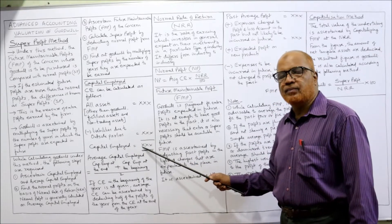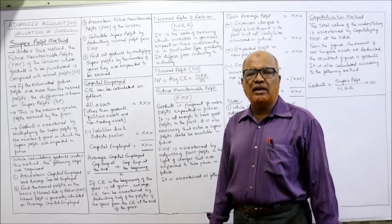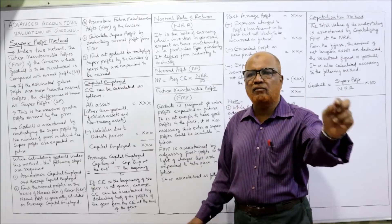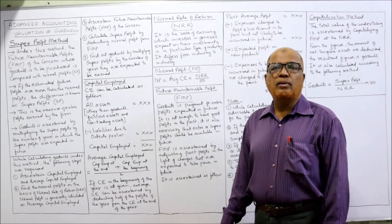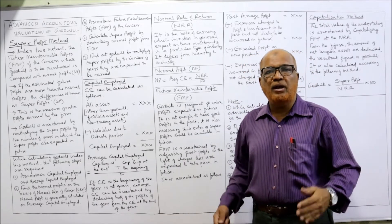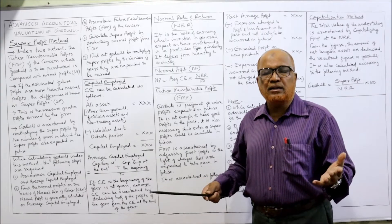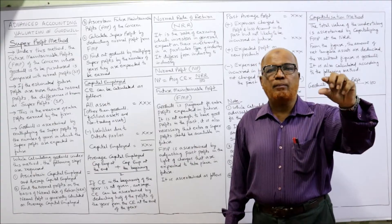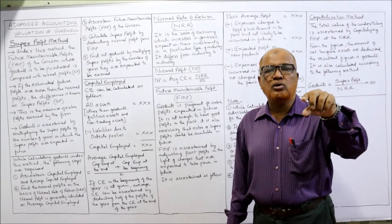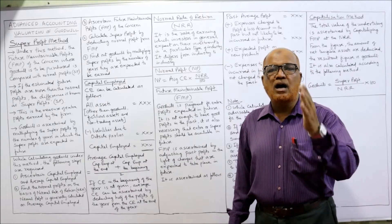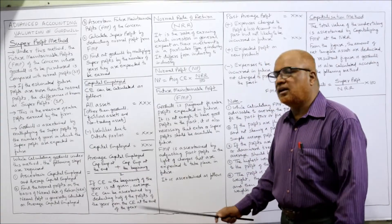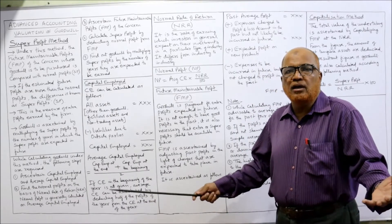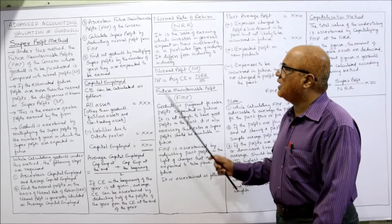After deducting outside liabilities, you get capital employed. For average capital employed, the formula is: (Opening Capital Employed + Closing Capital Employed) ÷ 2. But if opening capital employed is not given in the problem, calculate it as: Closing Capital Employed − Half of the Profit Earned During the Year. This will give you the average capital employed.